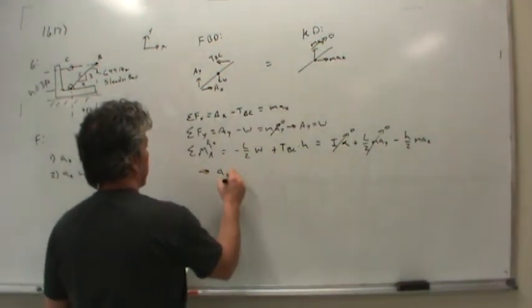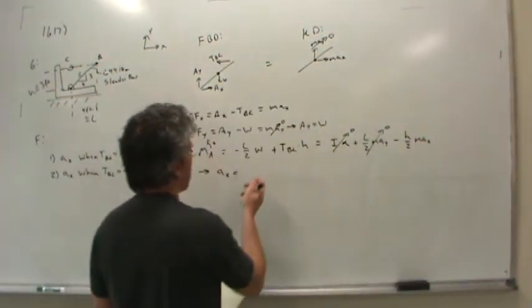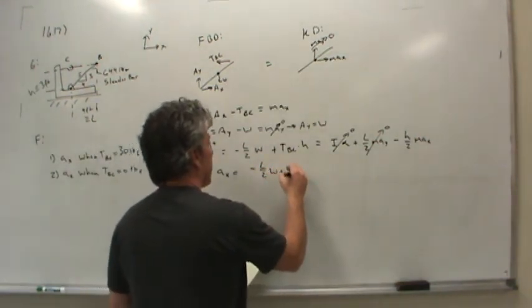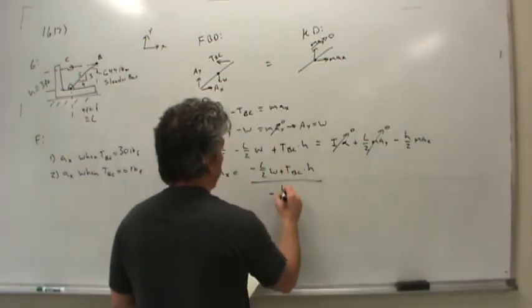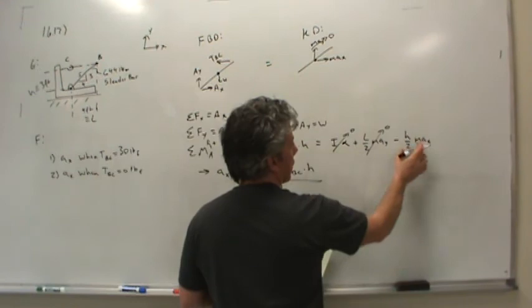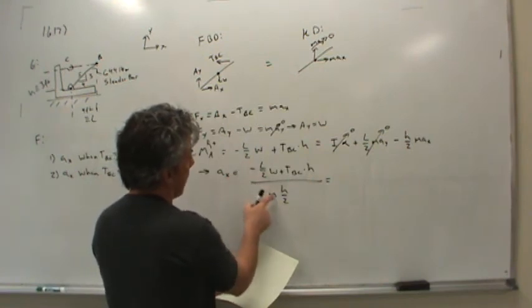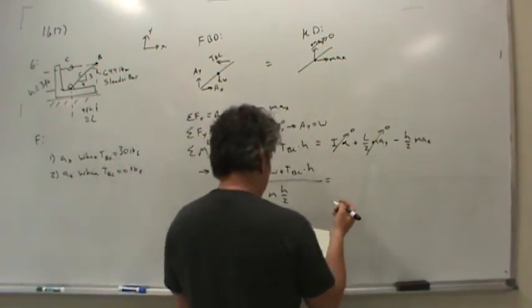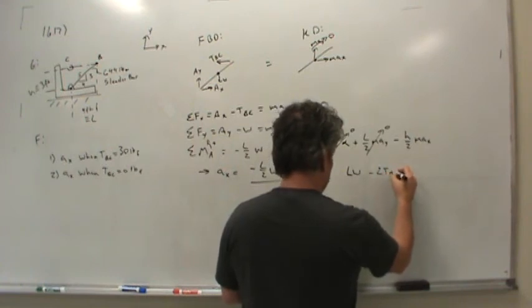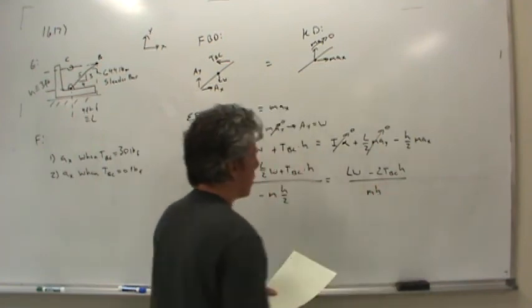Okay? Now, let's rearrange this and solve for the acceleration in the X direction, since that's what we were supposed to find. All I've got to do is invert and multiply these terms to the other side. So let me write negative L over 2, W, plus TBC, H, divided by negative H over 2. Oh, let me not forget the mass. All of this needs to be moved to the other side. Okay, simplifying just a little bit, it looks like I could multiply the top and the bottom by 2, maybe a negative 2, that would give me LW minus 2 TBC, H, divided by MH.